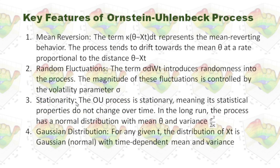There are several key features of the Ornstein-Uhlenbeck process. First, the term kappa times (theta minus x(t)) dt represents the mean-reverting behavior. Secondly, the term sigma dW(t) introduces randomness into the process. The magnitude of this fluctuation is controlled by the volatility parameter sigma.